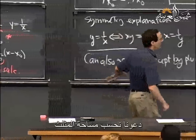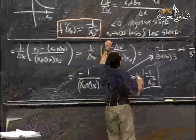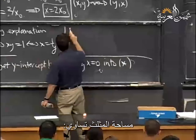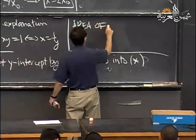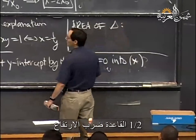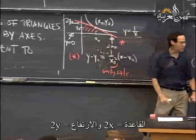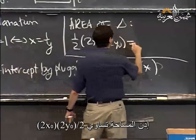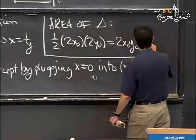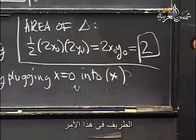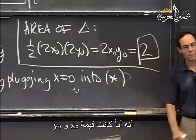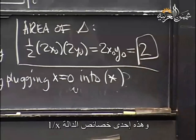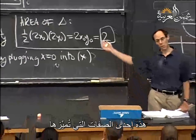Now let's finish off the problem. The area of the triangle is one-half times base times height: one-half times 2x₀ times 2y₀, which equals 2x₀y₀. Since y₀ = 1/x₀, this is just 2. Amusingly, it doesn't matter what x₀ and y₀ are — the answer is always 2, an accident of the function 1/x.